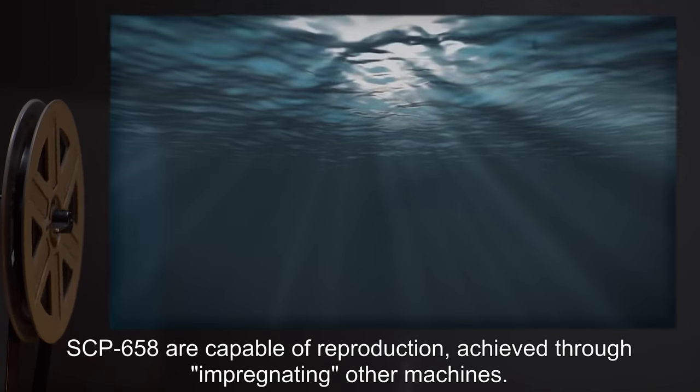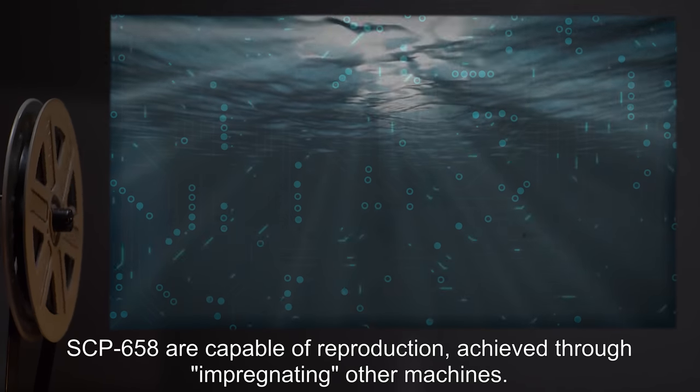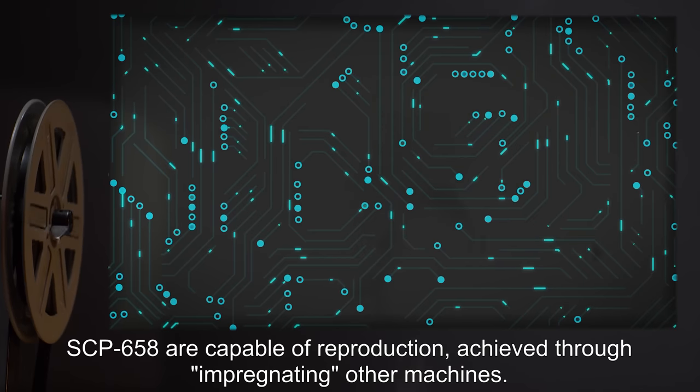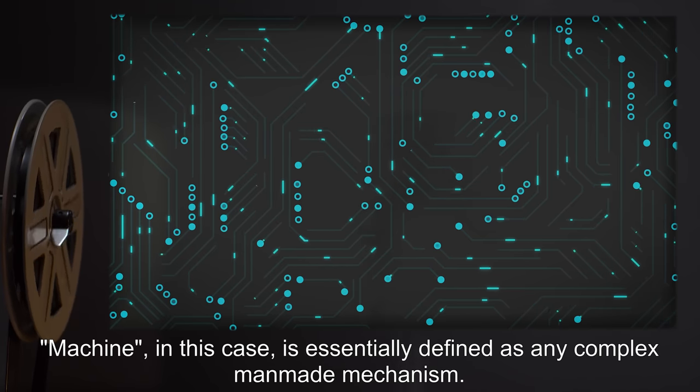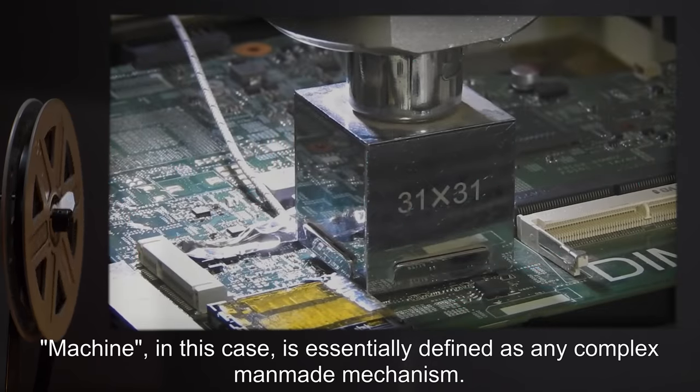SCP-658 are capable of reproduction, achieved through impregnating other machines. Machine, in this case, is essentially defined as any complex man-made mechanism.